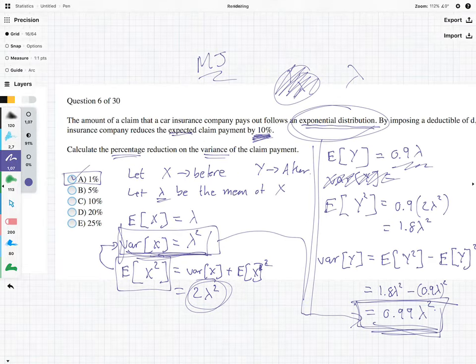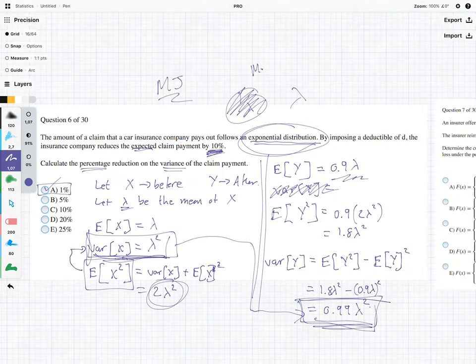So for this question, we did have to use something known as the memoryless property. But remember, the big trick here is use your expected values if you want to calculate your variance.